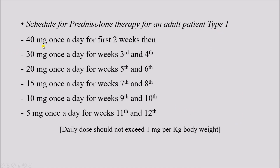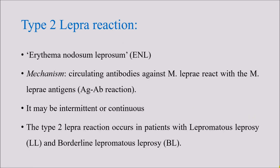The prednisolone schedule for type 1 reaction is: 40 mg once daily for two weeks, then 30 mg once daily for two weeks, then 20 mg once daily for two weeks, then 15 mg once daily for two weeks, then 10 mg once daily for two weeks, and then 5 mg once daily for two weeks. The dose is lowered every two weeks, and the full course is 12 weeks — that is, three months.